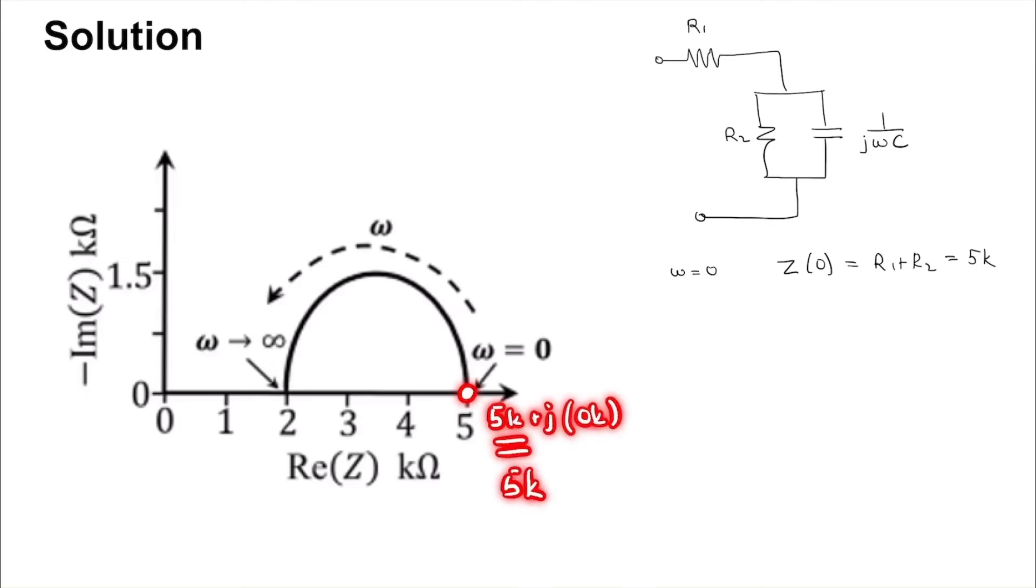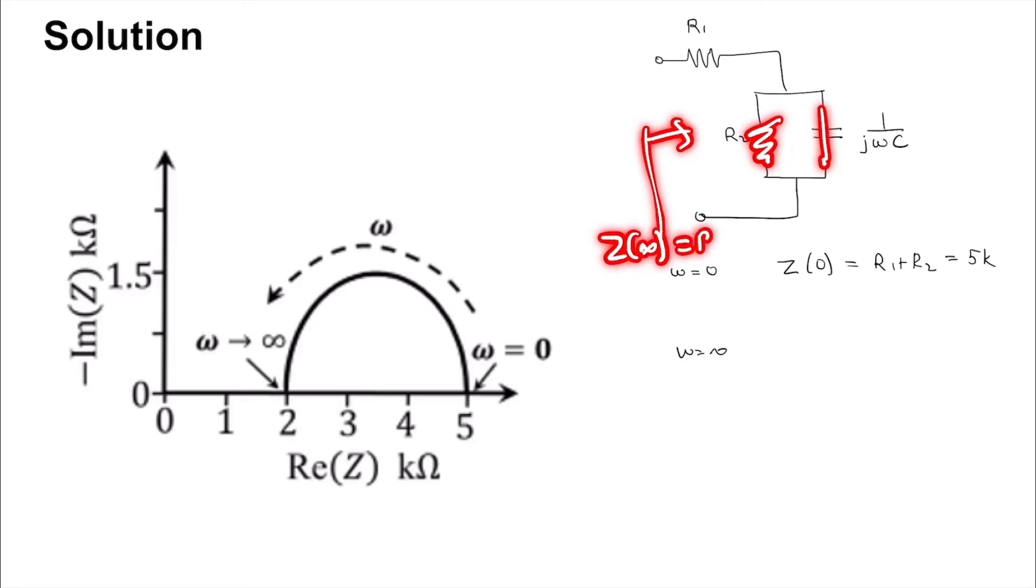At omega equal to infinity, this is just a short because you put infinity in the denominator, so 1 over infinity equals 0. If this is a short then you can ignore this, so the looking in impedance Z of infinity is going to be R1.